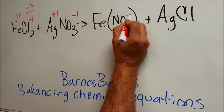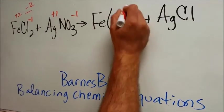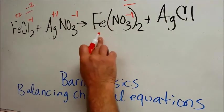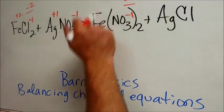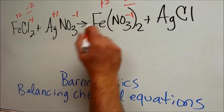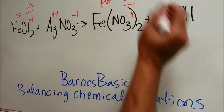Nitrate is minus 1, and we have two of them. Two times minus 1 makes minus 2, and so the iron must be plus 2. That's iron(II). We see that again. So this is balanced.